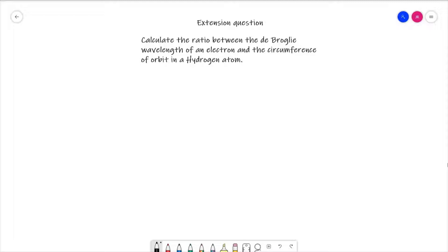Here we go then. What we're being asked for is the ratio between lambda, the de Broglie wavelength, and 2πr, which is the circumference of the orbit.